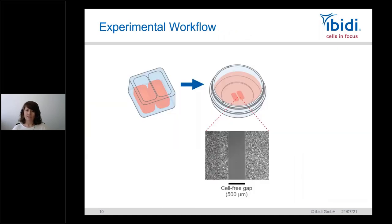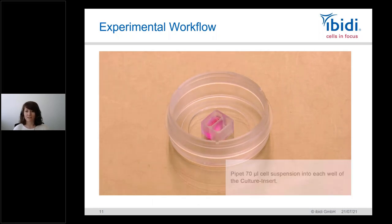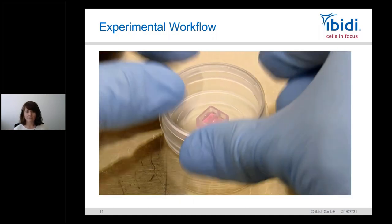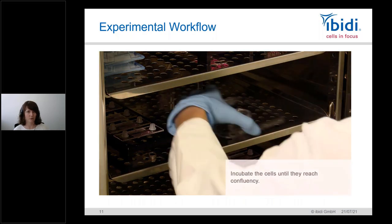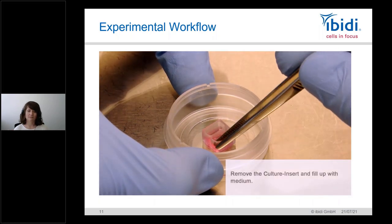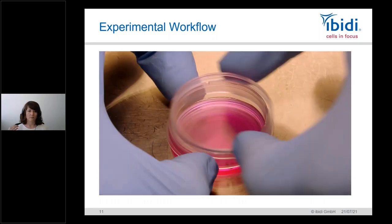The insert itself creates a gap — between those two wells there is a spacer. You seed cells into the two wells, let them form a confluent monolayer — that's important, it has to be confluent — then remove the insert to reveal two cell populations with a 500 micrometer gap in the middle. The workflow is simple: fill with 70 microliters of cell suspension, place in the incubator, wait until confluent, then carefully remove the insert, fill the dish with medium, and place it on the microscope for imaging.